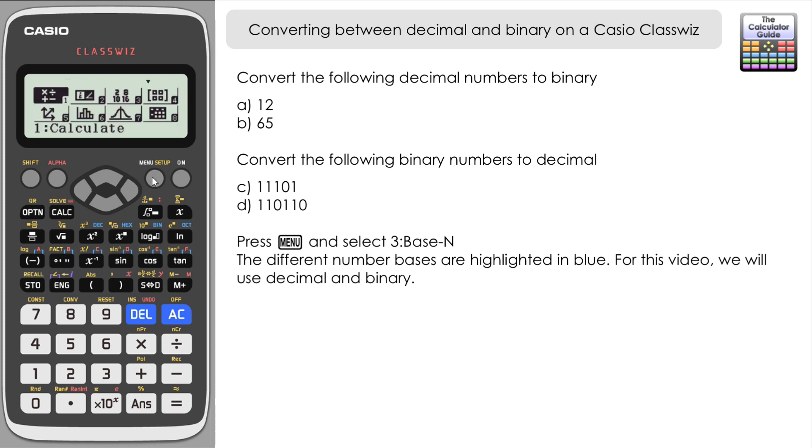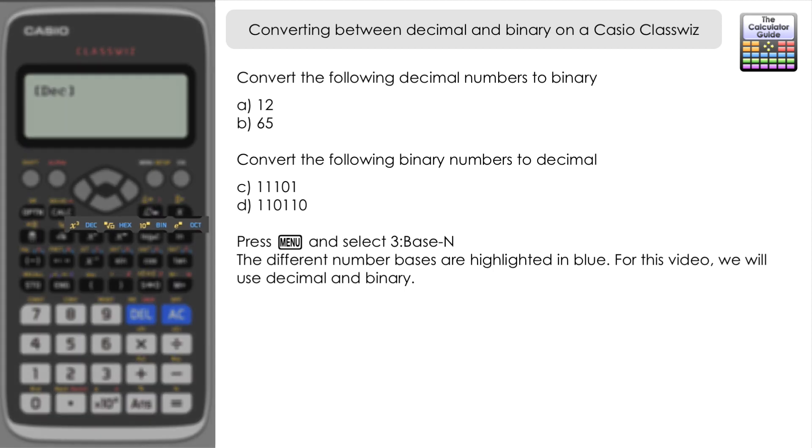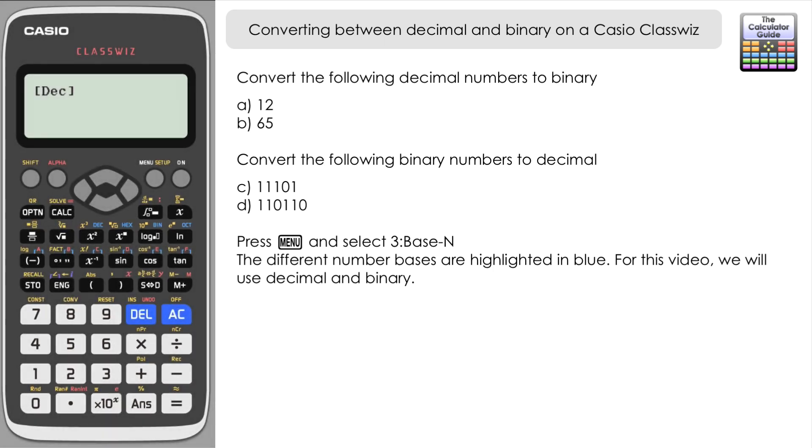Press menu and select option 3, Base-N mode. You can see highlighted in blue above these four buttons we have decimal and binary. We also have hexadecimal and octal, but we're not going to use those in this video, just decimal and binary.